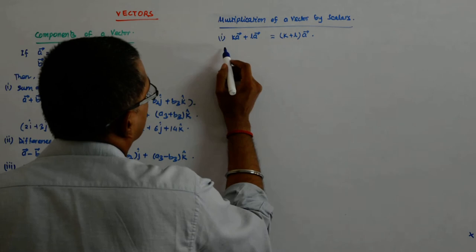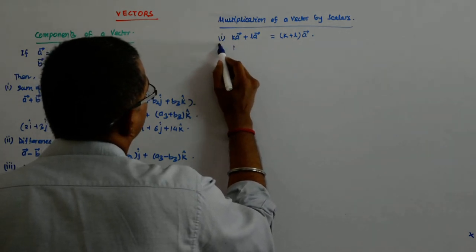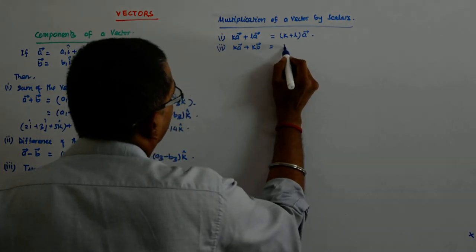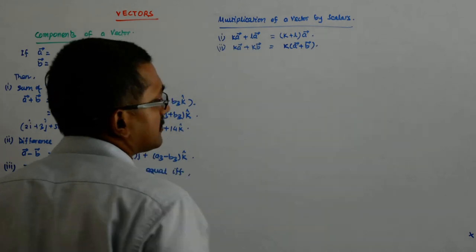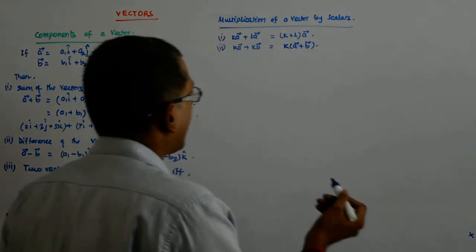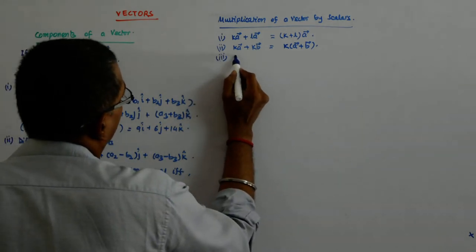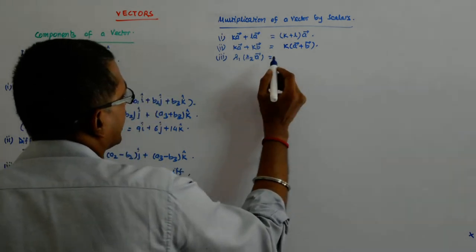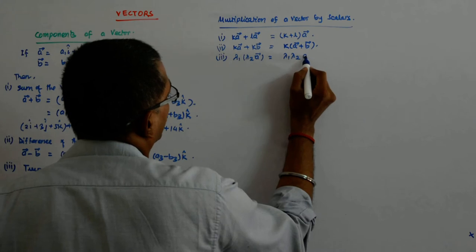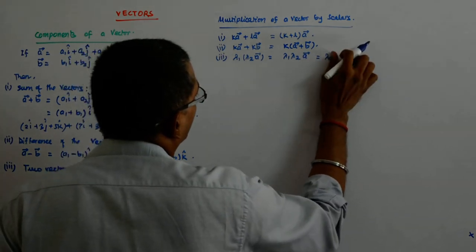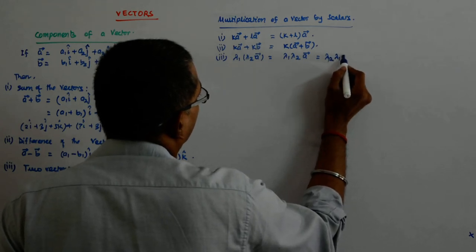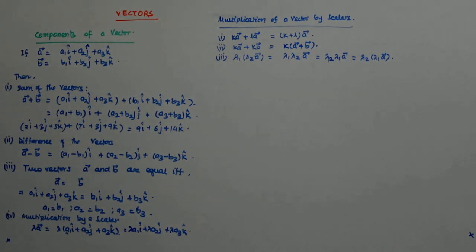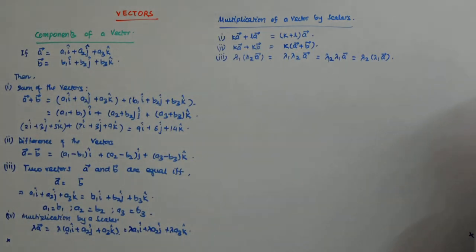And if it is K A plus K B, then that will be equal to K times A plus B. If I have lambda 1 multiplied by lambda 2 multiplied by A, then it can take any of these forms. This can be said to be equal to lambda 1 lambda 2 A, which will be equal to lambda 2 lambda 1 A, which will be equal to lambda 2 into lambda 1 A. That means they have a habit of coming in and going out since they are scalars and their multiplication is commutative.